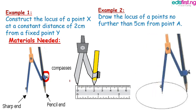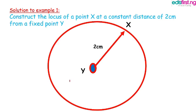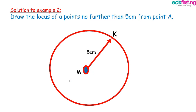Solution to Example 1: Y is the fixed point, and X is the locus that moves around with equal distance of 2 centimeters around Y. Example 2 is the same thing - the difference is that we have a distance of 5 centimeters, a fixed point of A, and the locus is K. That is, the distance between A and the circle, which is K, is 5 centimeters.